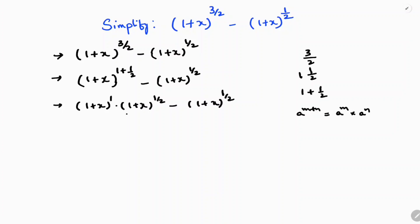Now, observe that (1 + x) whole power 1 by 2 is common. Taking (1 + x) whole power 1 by 2 as the common factor, you are left with (1 + x) minus 1 inside the bracket.